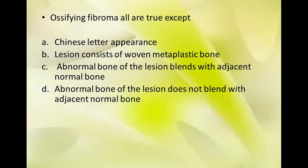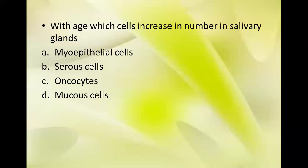Next question: regarding ossifying fibroma, all are true except which? Options: A — Chinese letter appearance; B — lesion consists of woven metaplastic bone; C — abnormal bone of the lesion blends with edges in normal bone; D — abnormal bone of the lesion does not blend with edges in normal bone. The answer is C, because in ossifying fibroma the abnormal bone does NOT blend with normal bone.